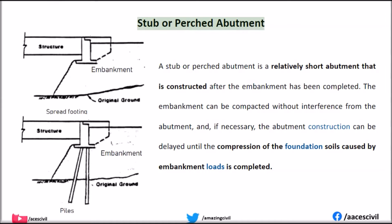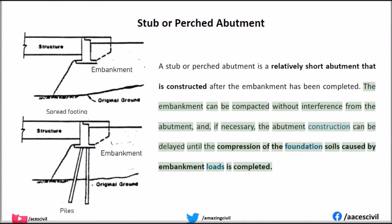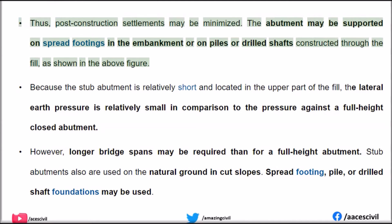A stub or perched abutment is a relatively short abutment that is constructed after the embankment has been completed. The embankment can be compacted without interference from the abutment, and, if necessary, the abutment construction can be delayed until the compression of the foundation soils caused by embankment loads is completed. Thus, post-construction settlements may be minimized. The abutment may be supported on spread footings in the embankment or on piles or drilled shafts constructed through the fill, as shown in the figure.